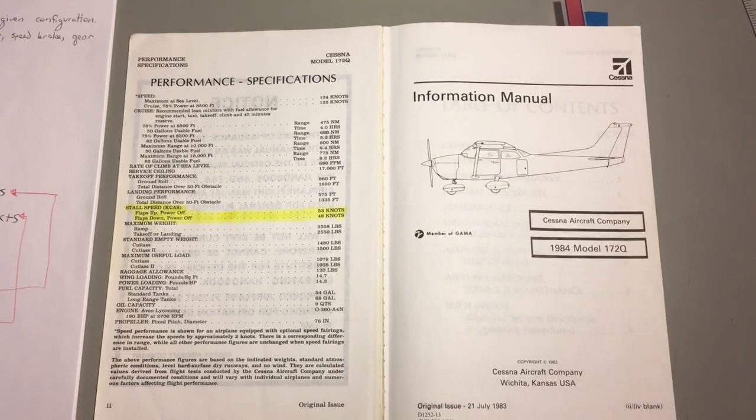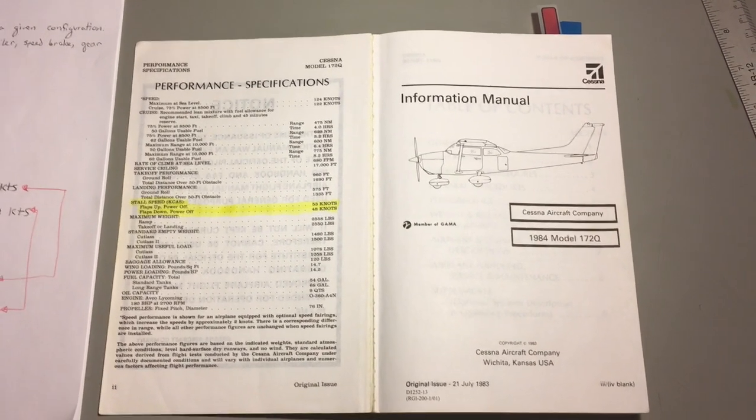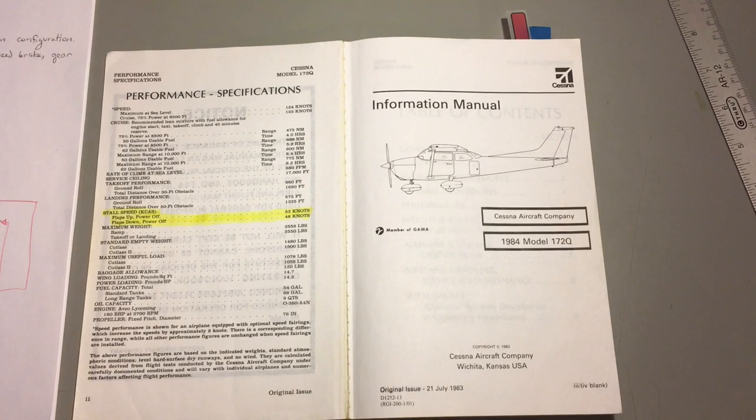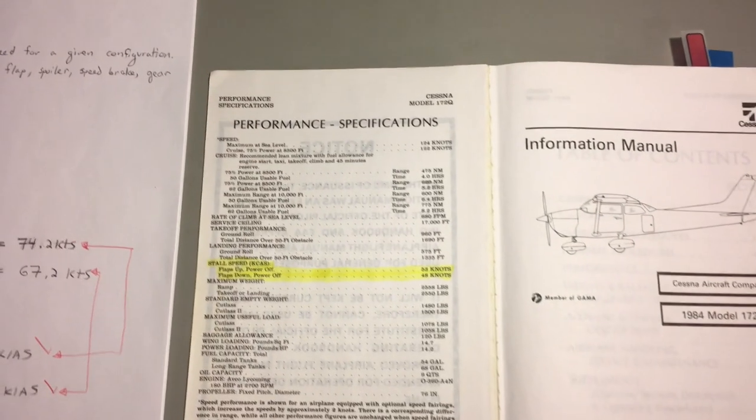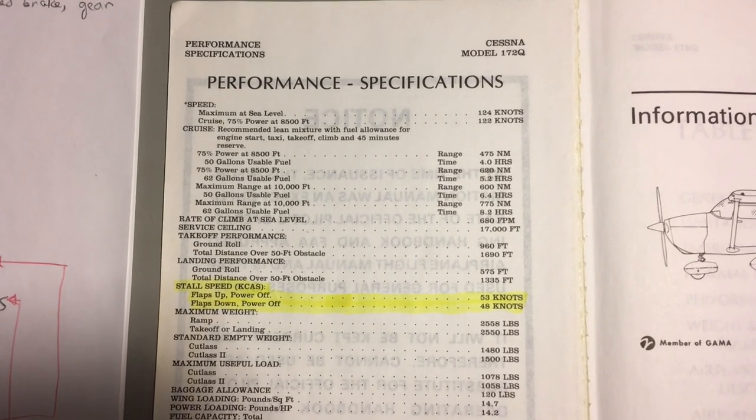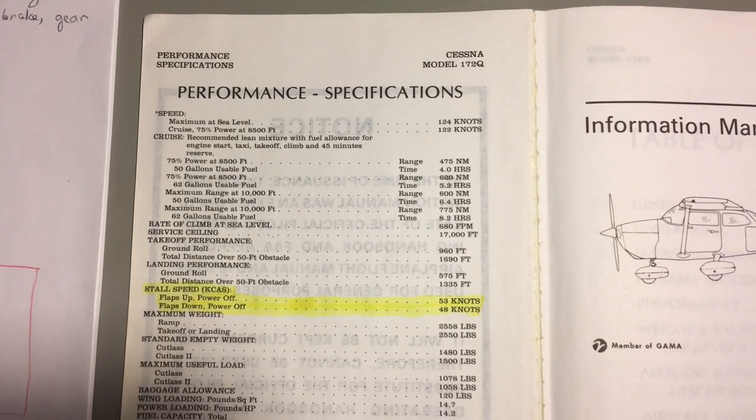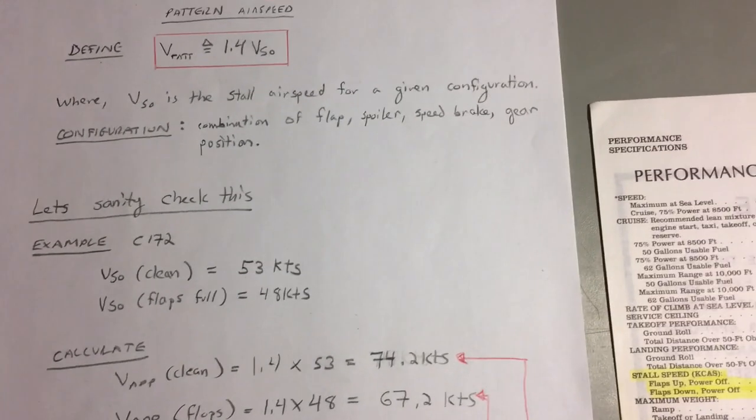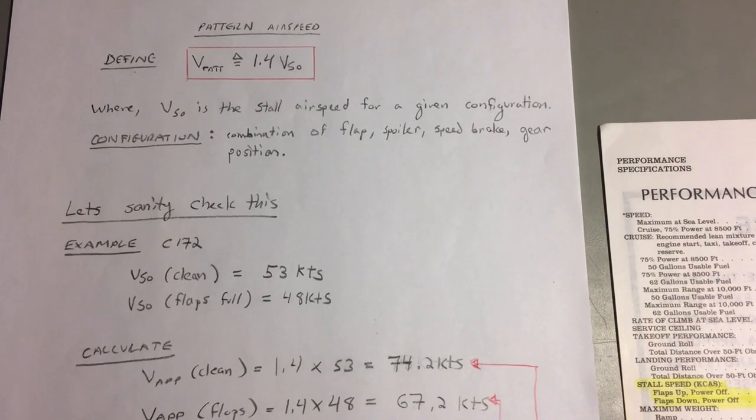The next thing we're going to do is turn to the aircraft operating handbook and look up the stall speeds of the aircraft, plug that into our formula and calculate the theoretical approach speeds. In this case I've gotten the 172Q model pilots operating handbook. In the very first page under performance specifications I've highlighted stall speed flaps up power off 53 knots and flaps down power off 48 knots.